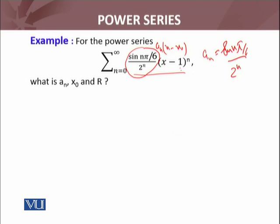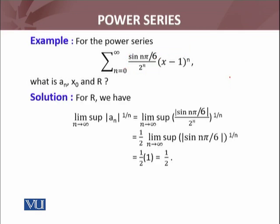In place of x we have x, and x_0 is 1. So a_n is identified and x_0 is also identified. We have to find R. For R, we need to calculate lim sup as n approaches infinity of |a_n|^(1/n). We calculate this: the limit supremum of |a_n|^(1/n) equals this 1/2 which comes out as a common constant.